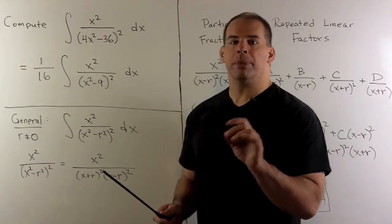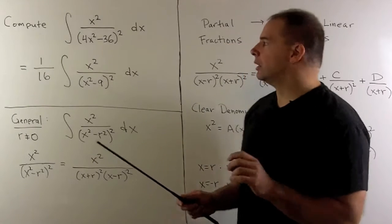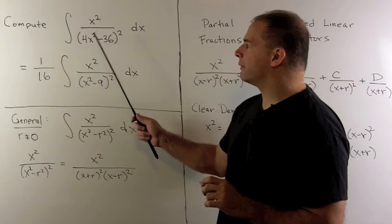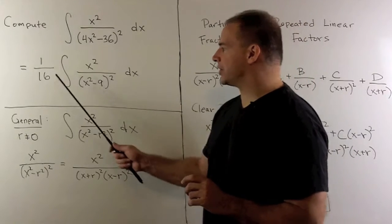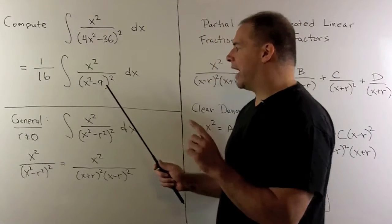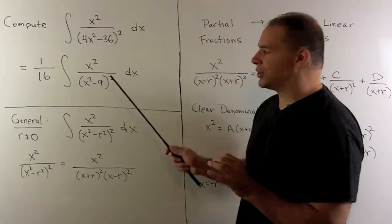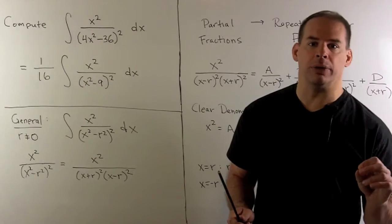First, I want to pull the numbers out. I can factor 4 out of 4x squared minus 36. Since we're squaring, we're going to pull out 16. Then I'm going to take the 9 and replace it with r squared, so r will be equal to 3.